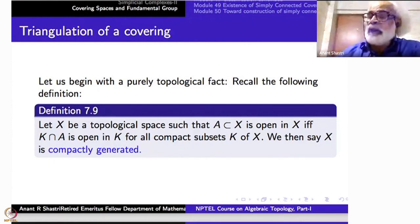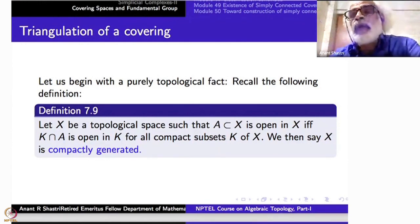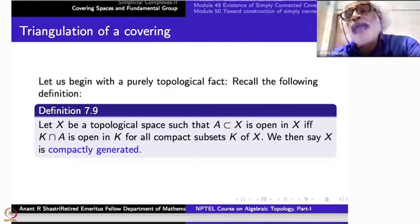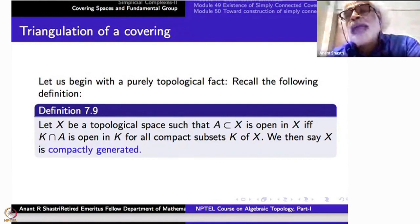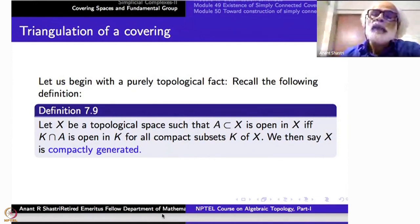Why? Because any compact set is covered by finitely many closed simplexes, and each closed simplex is compact. The weak topology is precisely the topology controlled by each closed simplex: a set is closed if its intersection with each closed simplex is closed in the simplex. That is the relevance of compact generation when dealing with simplicial complexes.